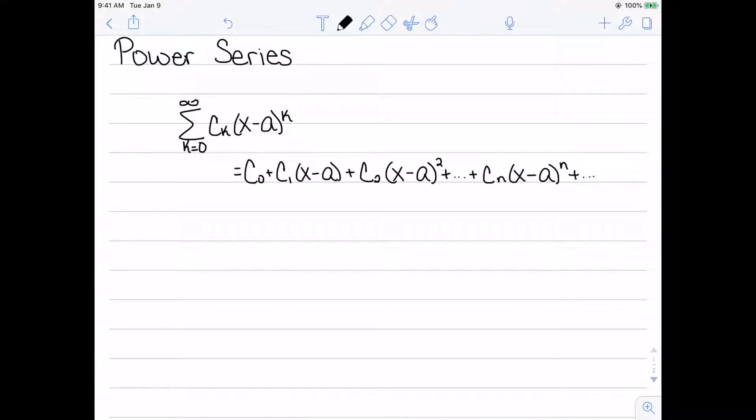And then we just continue this indefinitely, c_n times (x minus a) to the n, and then we keep going. We call a the center and the c's are the coefficients. And the main thing is we're looking at polynomials of increasing powers. Essentially, if I take the first n terms, I have an nth degree polynomial. And then if I keep going, I have an infinite degree polynomial.